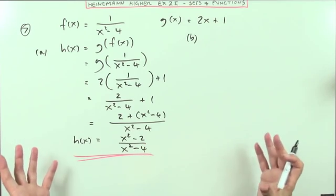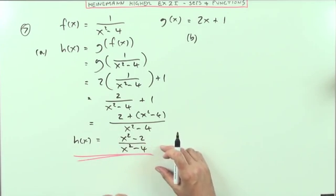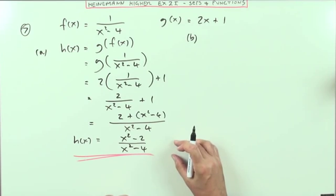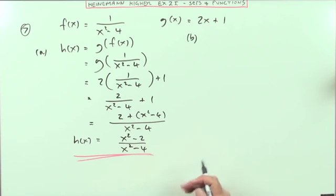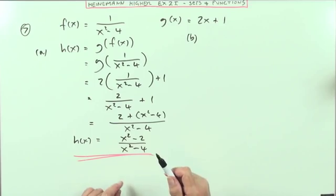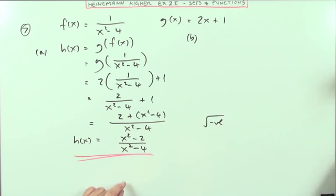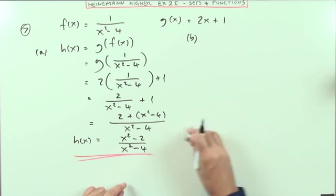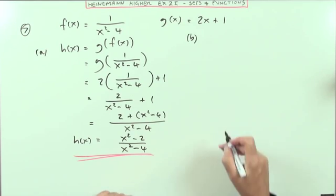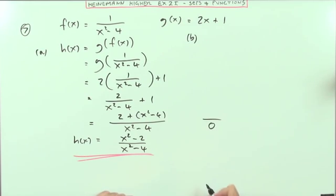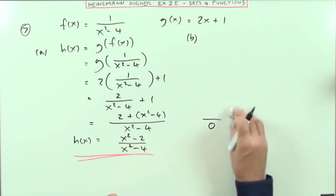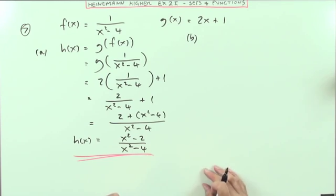means the set of numbers that you can put into this formula and get an answer. Now normally you can just put any real number in, but you have to watch because you can't put in numbers that would give you the square root of a negative, because then you wouldn't get an answer, or rather not a real answer. And you can't put in any number that would result in you dividing by 0. So those are the two things we can't have here. Well, there's no square roots, but I've got a denominator.